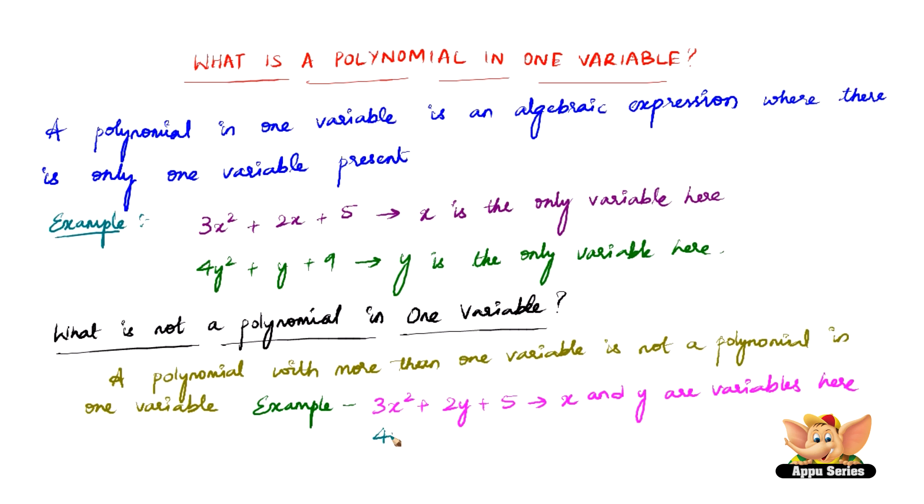Here, another example, which is 4y squared plus x plus 9. Now here again, there are two variables present, that is x and y. So therefore, these two algebraic expressions do not qualify as polynomial in one variable.